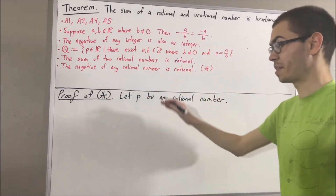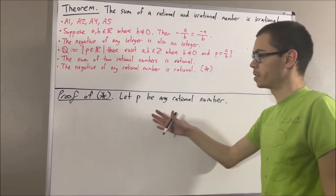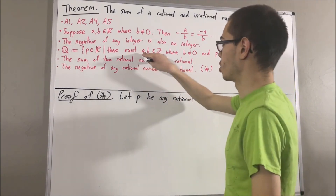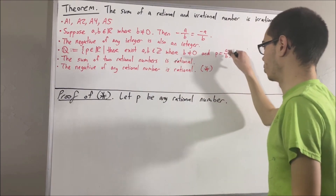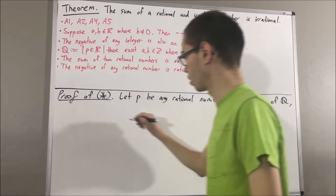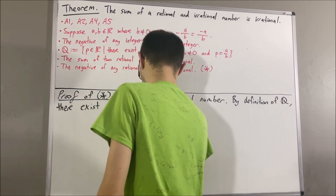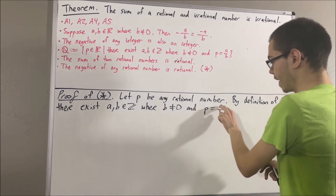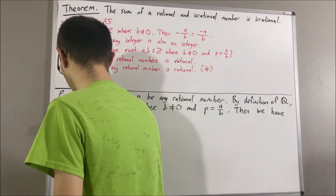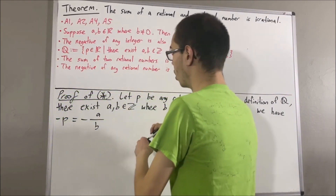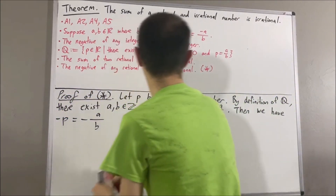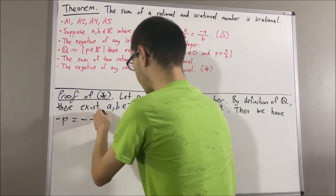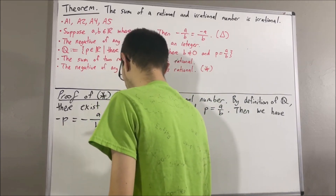The whole goal is to show that the negative of p is a rational number. By definition of the rational numbers, since p is a rational number, this tells us that there exist integers a and b, where b is non-zero, and p is equal to a over b. Since these are equal, that tells us that the negative of p is equal to the negative of a over b. But according to this result, which I will call triangle, the negative of a over b is equal to negative a over b.